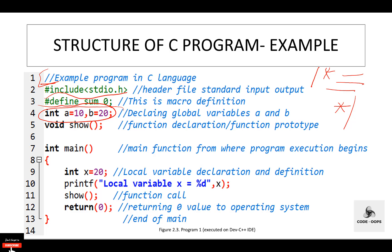In the global declaration section, we have declared two global variables A and B. Value 10 is assigned to A and value 20 is assigned to B. Then we declare a user-defined function: void is the return type and show is the name of the function. This is a function declaration, also known as a function prototype.